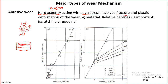Abrasive wear involves fracture and plastic deformation. If the second surface is also hard, plastic deformation will be limited, and particles will come out because of fracture. At the contact level, both plastic deformation and fracture are taking place. Relative hardness is important, but abrasive wear can happen between hard-soft as well as hard-hard surfaces. Very mild wear is called scratching; deeper wear is called gouging.